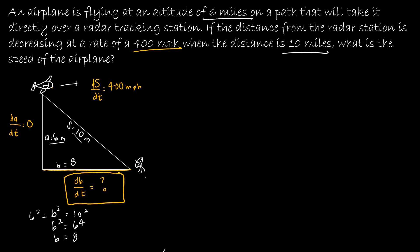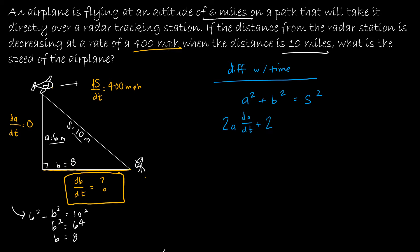The question is: what am I going to differentiate with respect to time? Even though I've already used the Pythagorean theorem with actual values, the Pythagorean theorem is what I want to differentiate. So I'm going to write A² + B² = S². If I differentiate this, I get 2A·(dA/dt) + 2B·(dB/dt) = 2S·(dS/dt). And of course it makes sense to divide everything by 2 to reduce the extra work.